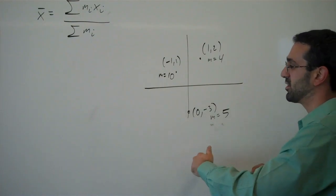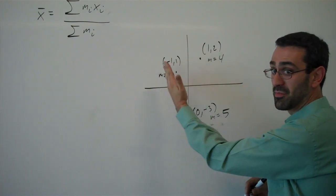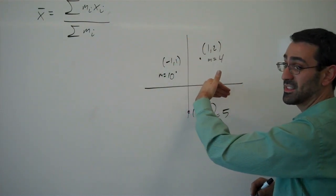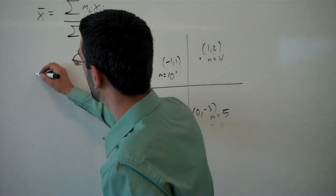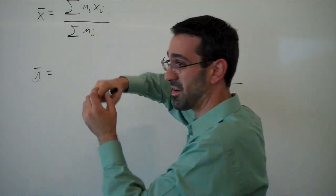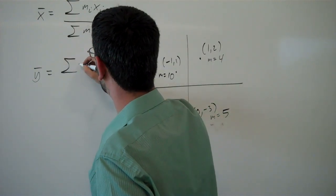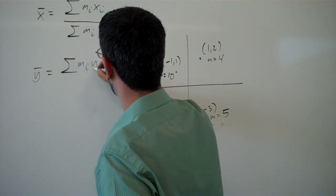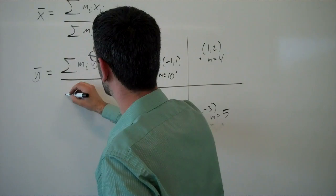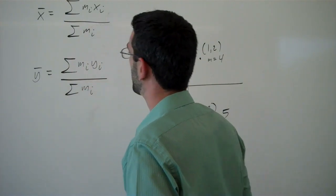Maybe we're wondering not only where is the x center of mass, but also where is the y center of mass. Extending what we did here, and just sort of reimagining it along the vertical axis, you can probably see that this is going to be mass times y values over the sum of the masses.